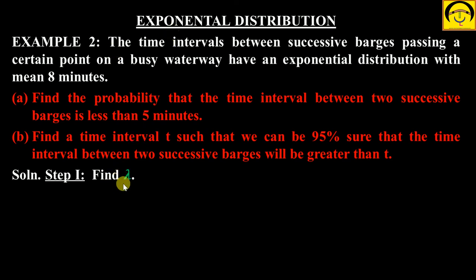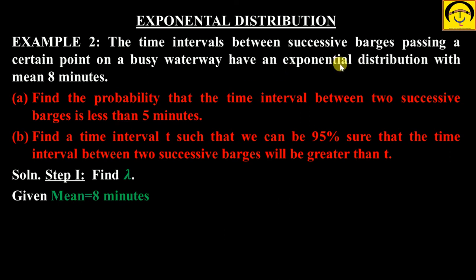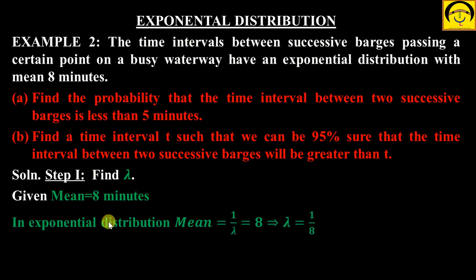Pehla step: apne paas exponential distribution mein lambda nikalo. Yahan kya diya hai: mean diya hai, 8 minutes. Mean exponential distribution mein 1/λ, so 1/λ = 8, so lambda = 1/8 = 0.125. Lambda nikal gaya.